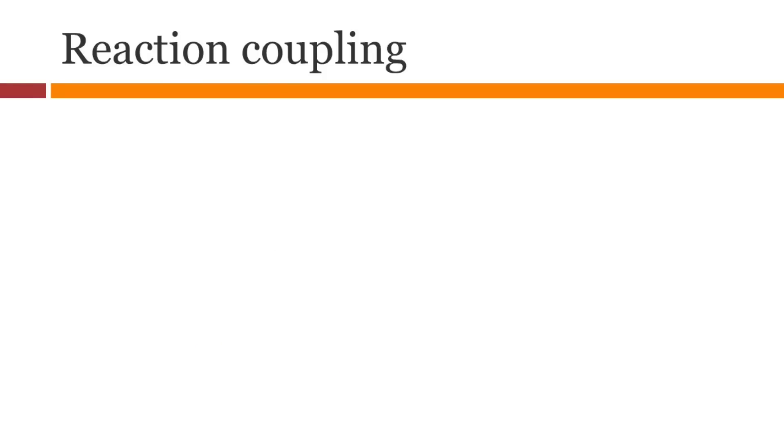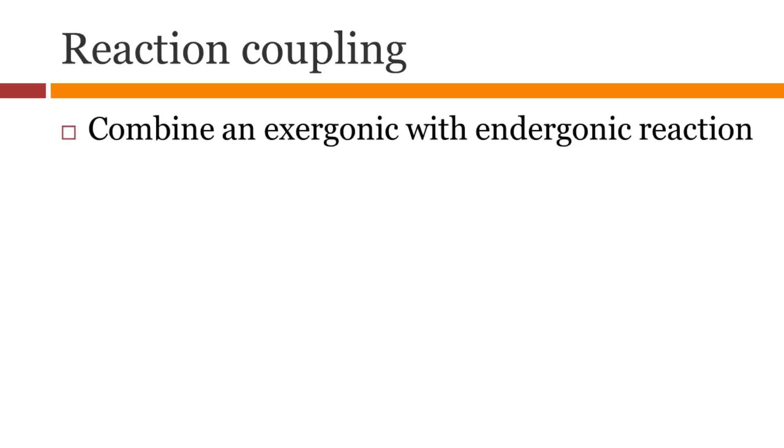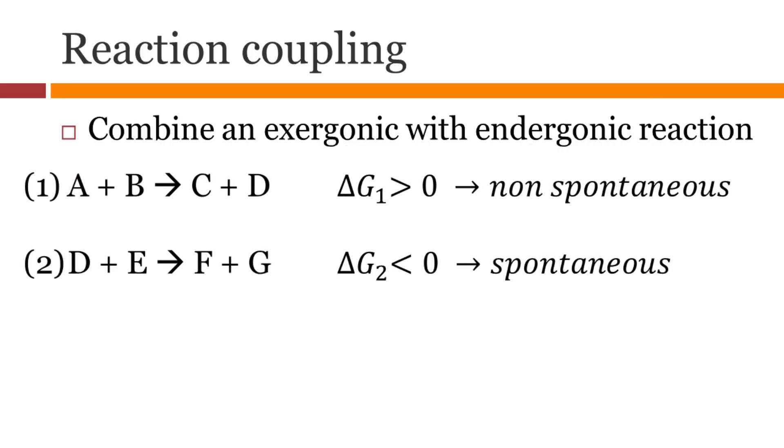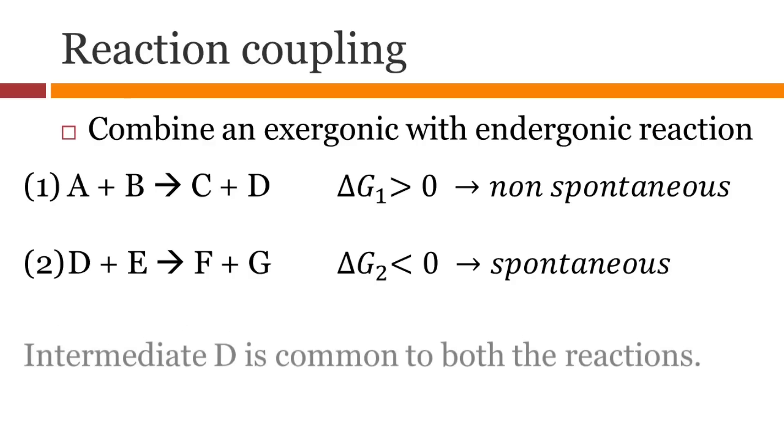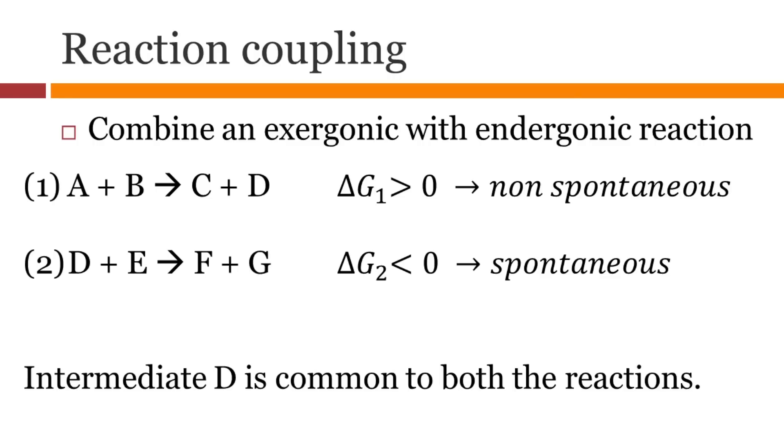To drive endergonic reactions, we use something called reaction coupling. We combine a non-spontaneous reaction with a spontaneous one with an intermediate common on both reactions. In this schematic, you see reaction 1 is non-spontaneous and reaction 2 is spontaneous. We use D as a common intermediate.